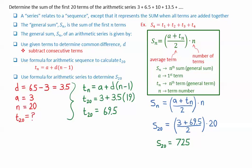This gives a result of 725 for the sum of the first 20 terms.